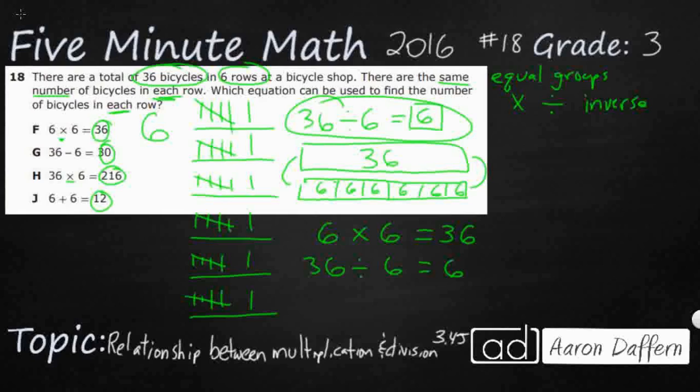So what we need to see here is that these are number sentences that are in a fact family. Now, normally there are 4 number sentences in a fact family: 2 multiplication, 2 division. Or if you're doing addition, subtraction, 2 of each.